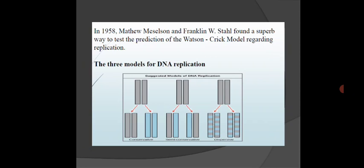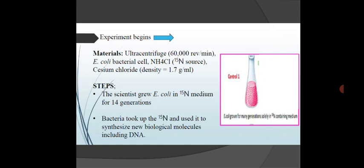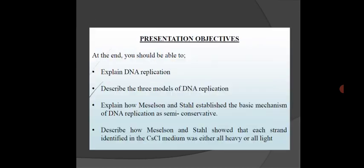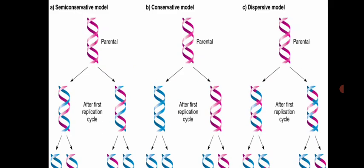The three models for DNA replication: In 1958, Matthew Meselson and Franklin Stahl found a way to test a prediction of the Watson and Crick model regarding replication. Before we begin the experiment, I will give an introduction of what we have to study. The semi-conservative mode means that one strand will be newly synthesized and one strand will be parental, which specifies the semi-conservative mode.